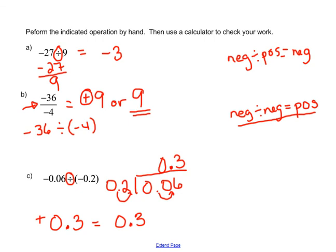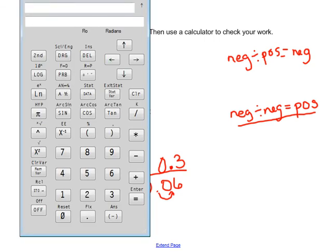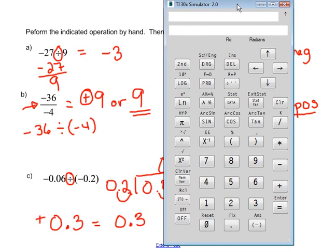So let's do our check real quick on our calculator. Let's pull the calculator up here. Let me just move it over. Our first problem was negative 27 divided by 9. Negative 27 divided by, here's our division sign up here. Divided by 9 equals negative 3, just like we thought it was.